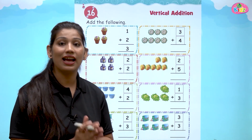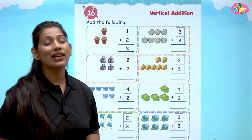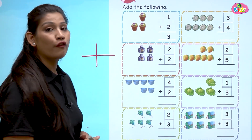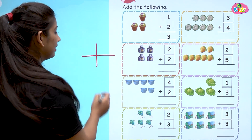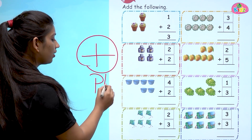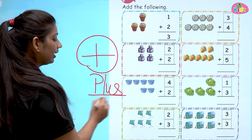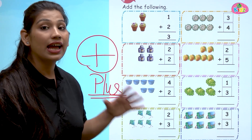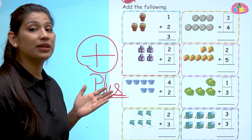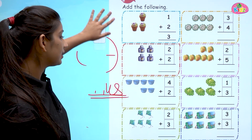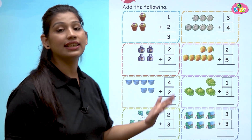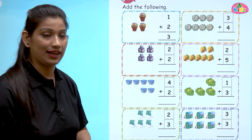Combine karna, add karna — this is called addition. This is the sign of plus, or add. With this sign we understand that we have to keep the things together. Is sign se hum samajhte hain ki hume saari chizu ko collectively ek saath combine karna hai, together karna hai.